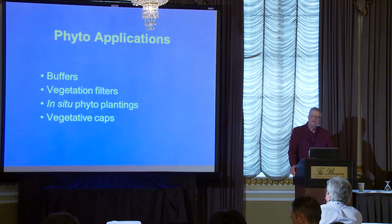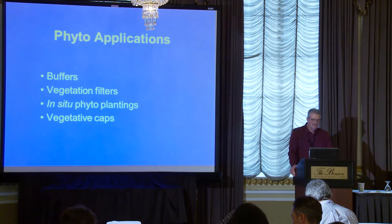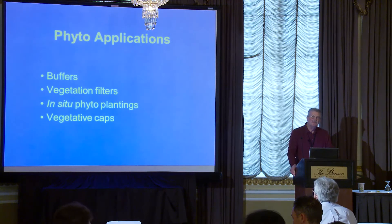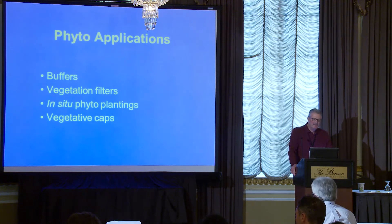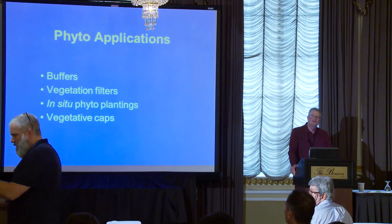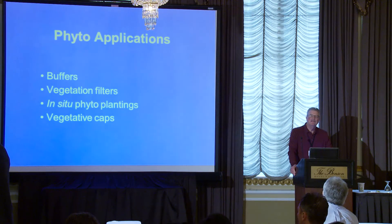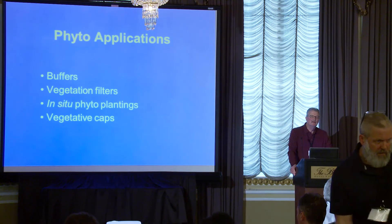We can apply these phytoremediation applications in many ways. Buffers are one — we put a buffer between contaminated soil and a wetland or stream. Vegetative filters are another: you can take wastewater and apply it directly to a planted area. If you have a spill, you can plant trees directly on it to take up and clean up the contamination. And increasingly, landfills are a major problem worldwide, and we're using vegetation to cap them rather than just a soil cap.